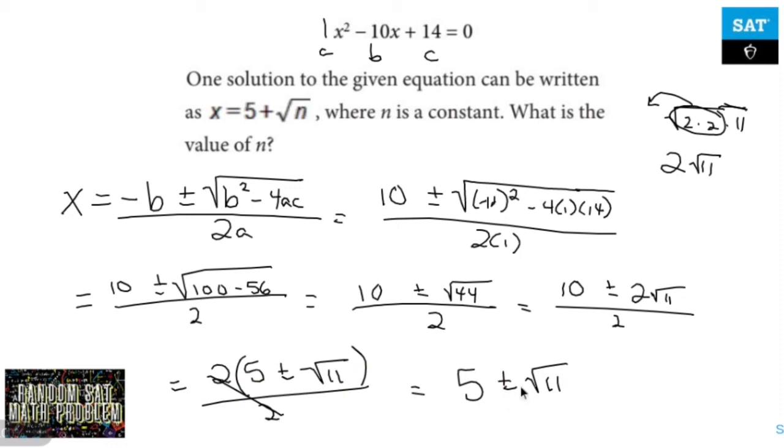And in this case, they only want the plus version, so we'll pretend that's not there. But what they really want is what's inside the root. And n is going to be 11, the number that's inside the root. That's it.